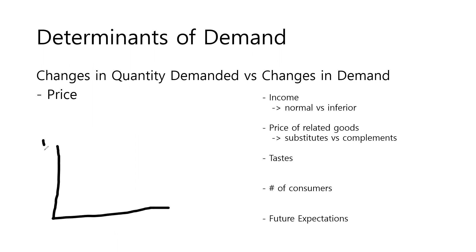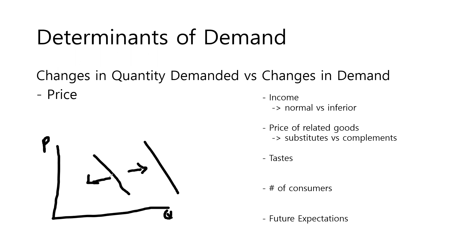A change in demand refers to a situation in which the graph itself shifts. If a demand curve shifts to the right, it is an increase in demand. If the demand curve shifts to the left, it is a decrease in demand. Let's check the five determinants of demand.